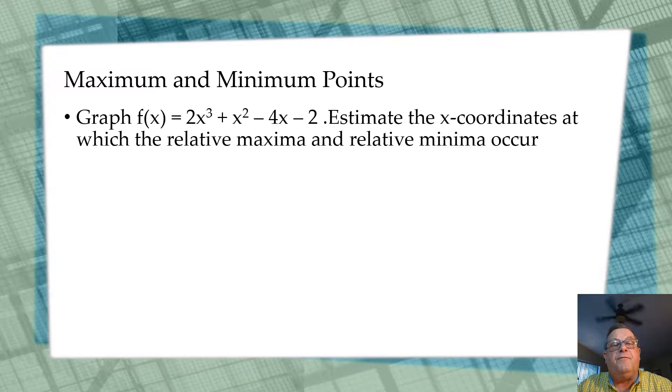Here we're asked to graph a function f(x) = 2x³ + x² - 4x - 2, and then estimate the x-coordinates at which the relative maxima and relative minima occur. Before we go to the calculator to do that, let's look at a couple of things here.